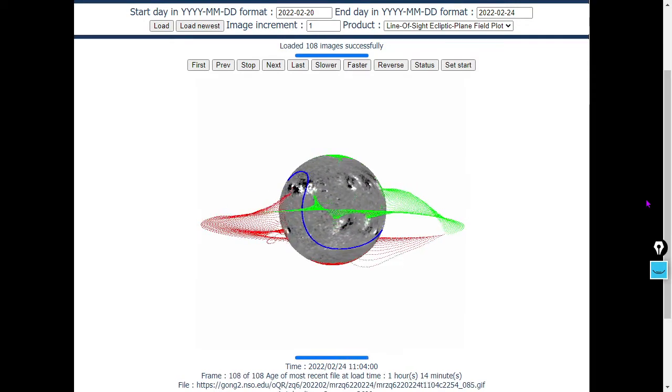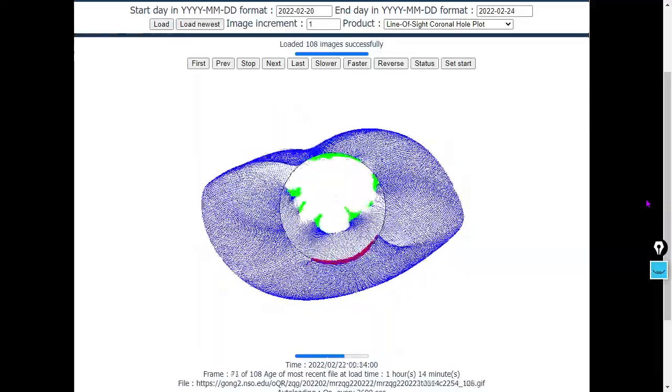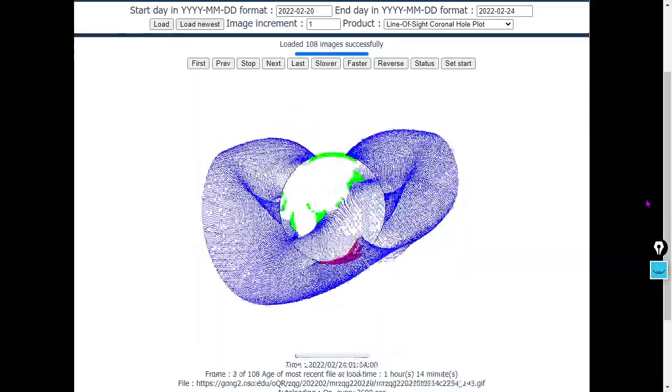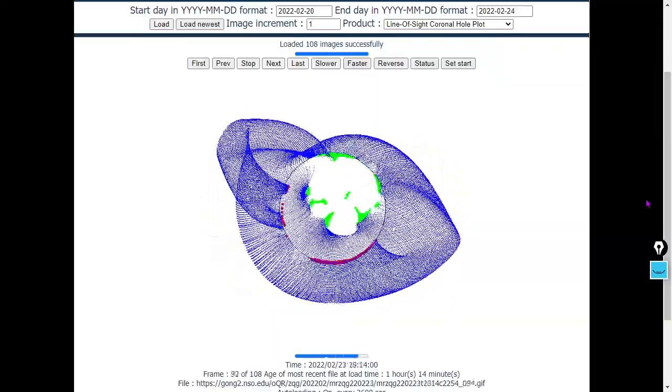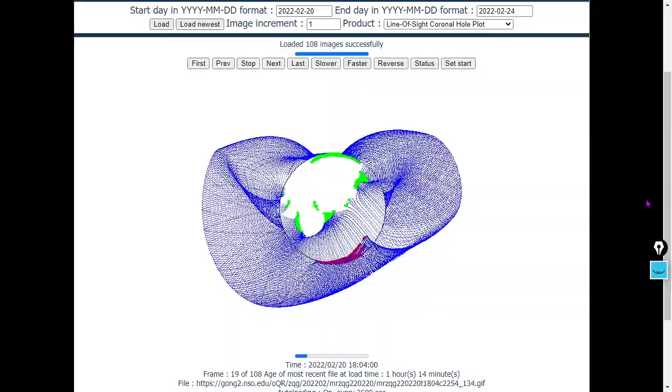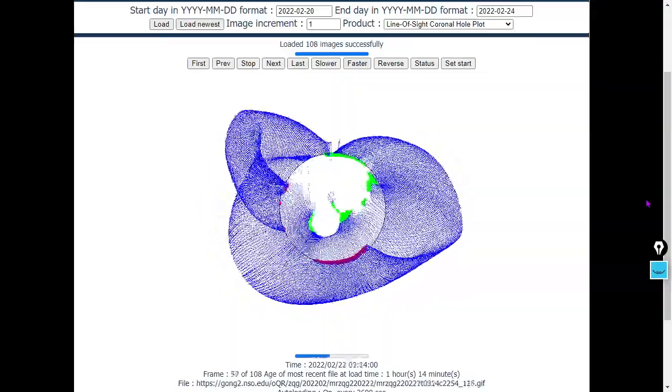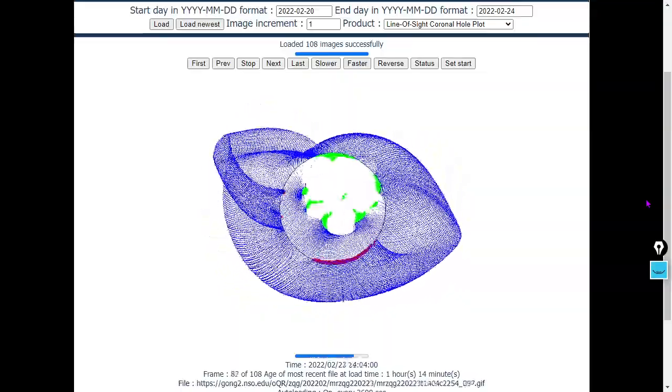Next, we'll look at the coronal hole line of sight plot. We do have some south pole oriented coronal holes here rotating in. They are trans-equatorial now as we see solar cycle 25 kicking into high gear as the solar polar fields reverse themselves throughout the cycle.